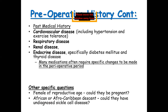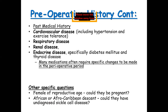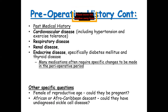Before undergoing anesthesia, there are many medications that may require either dose alterations or sometimes need to be stopped in the pre-operative period. On the other hand, there are certain drugs like beta-blockers which need to be continued during the perioperative period, because if they are withdrawn abruptly they can cause various side effects. Additionally, if a female patient is of reproductive age, questions regarding pregnancy should be asked. If the female patient is of African or Afro-Caribbean descent, there may be a possibility of undiagnosed sickle cell disease that should be explored further.